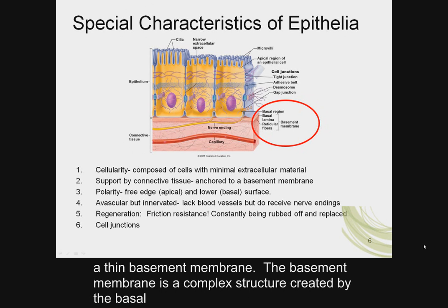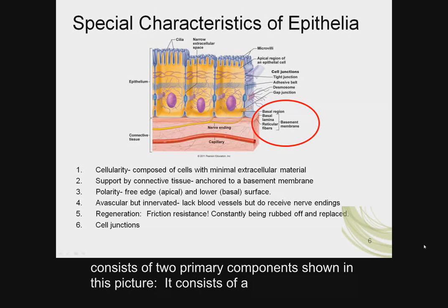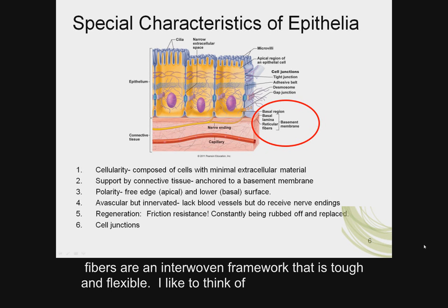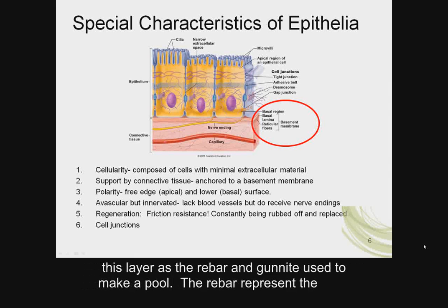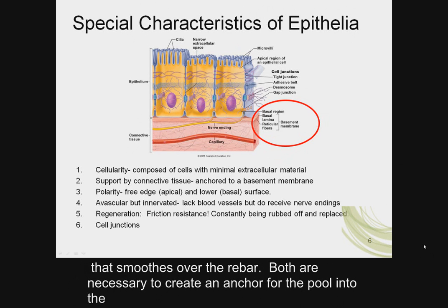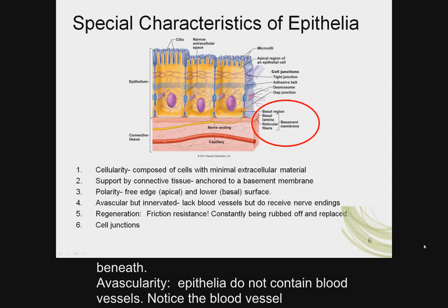3. Attachment — the basal surface of a typical epithelium is bound to a thin basement membrane, a complex structure created by the basal surface of the epithelium and the underlying connective tissue. The basement membrane consists of a sheet of extracellular proteins and reticular fibers, an interwoven framework that is tough and flexible. I like to think of this layer as the rebar and gunite used to make a pool — the rebar represents the reticular fiber framework, and the sheet of extracellular proteins is like the gunite that smooths over the rebar. Both are necessary to anchor the overlying cells to the connective tissue beneath.